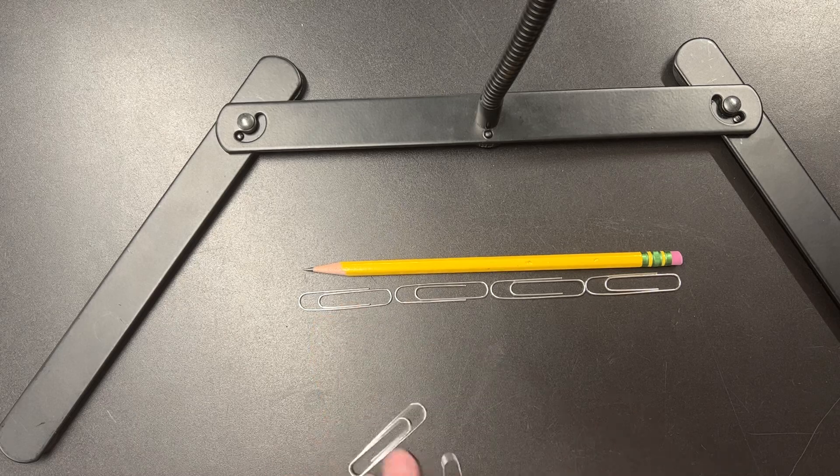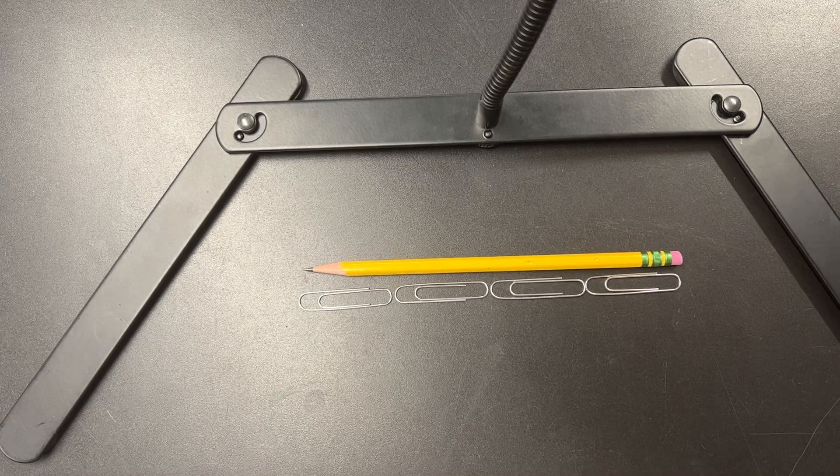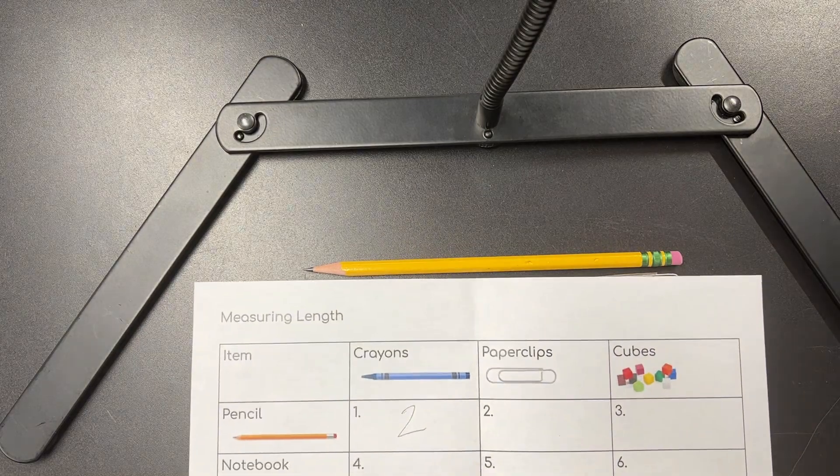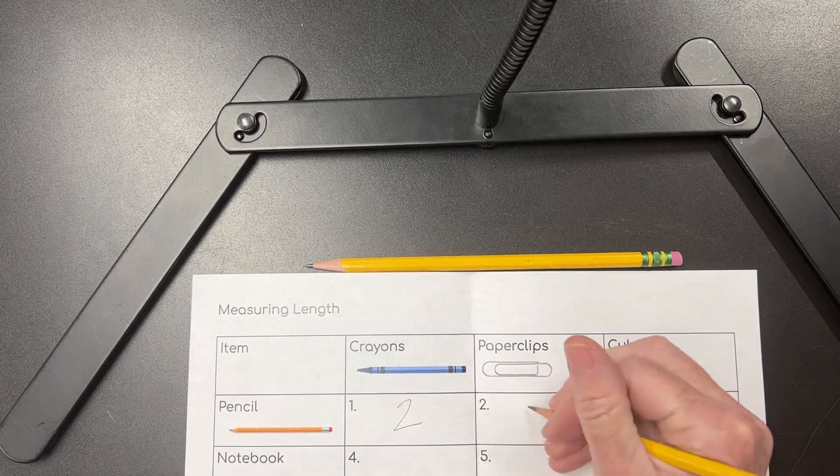Okay, it looks like my pencil is four paper clips long. So on my paper, next to pencil under paper clips, I'm going to write the number four.